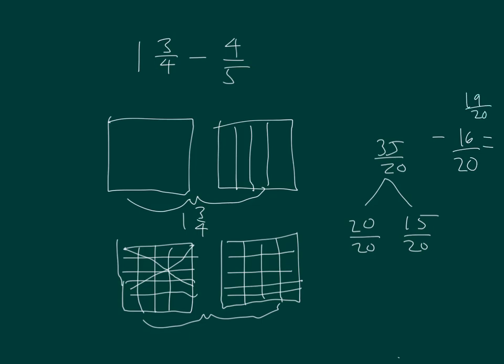Can we see that in our model? Let's see — that's five, ten, fifteen, sixteen, seventeen, eighteen, nineteen twentieths.